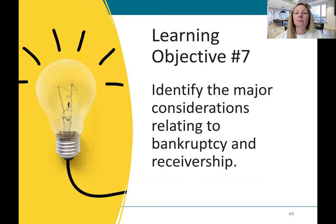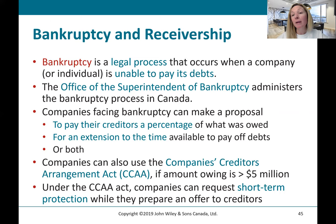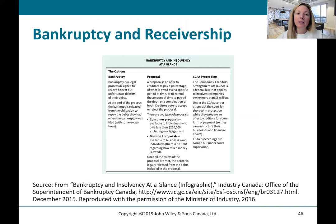Our seventh learning objective is to identify the major considerations relating to bankruptcy and receivership. Bankruptcy is a legal process that occurs when a company or individual is unable to pay its debts. Companies facing bankruptcy can make a proposal to their creditors to pay a percentage of what is owed, or request an extension of time to pay off debts, or both. Companies can also use the Company Creditors Arrangement Act if the amount owing is less than $5 million, which allows them to request short-term protection while preparing an offer to creditors.